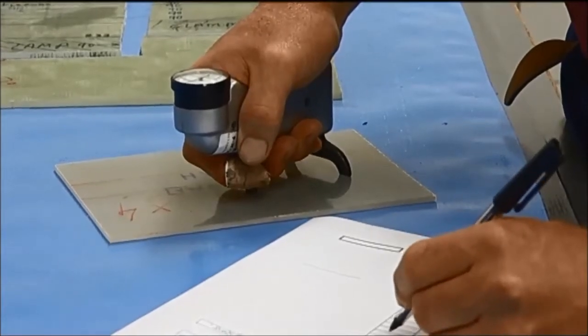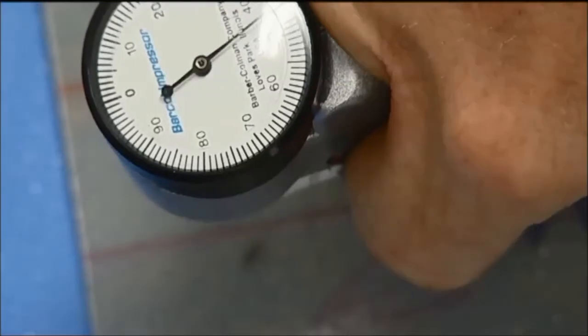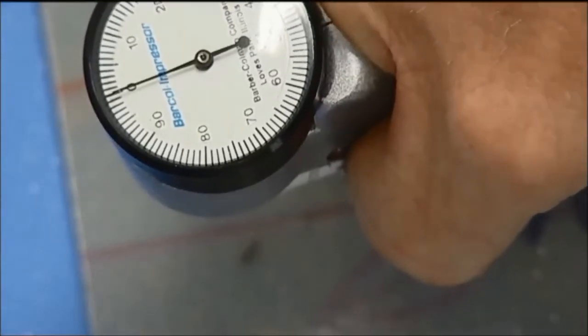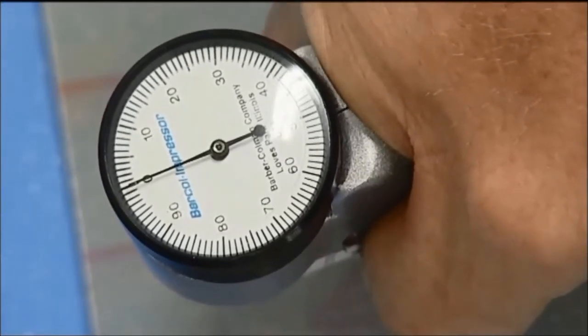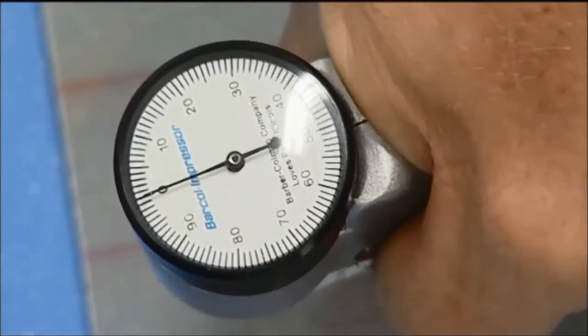The specimens are required to be a minimum thickness of one-sixteenth of an inch. They are placed under the indenter of the Barcol hardness tester and a uniform pressure is applied to the specimen until the dial indication reaches a maximum.